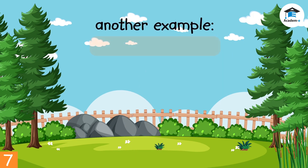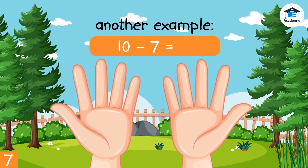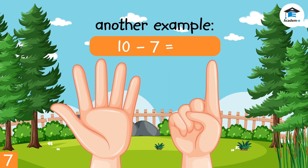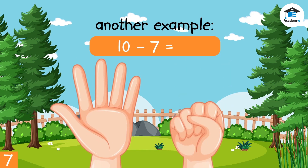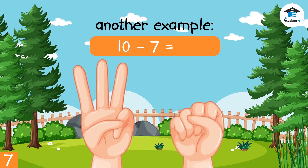Next example: 10 minus 7. Put out 10 fingers, then put down 7 fingers: 1, 2, 3, 4, 5, 6, 7. How many fingers are left? 1, 2, 3. There are 3 fingers left. So the answer is 3. 10 minus 7 is equal to 3.